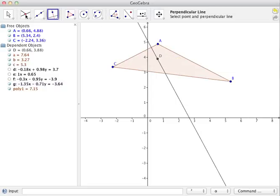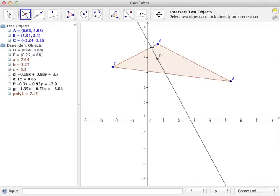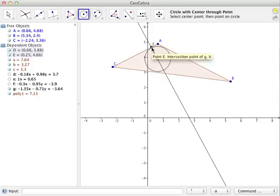What I'm going to do now is create the point of intersection between the two sides. Now what I should be able to do is using the circle creation tool is make a circle with D as my center and E as a point on the circle.